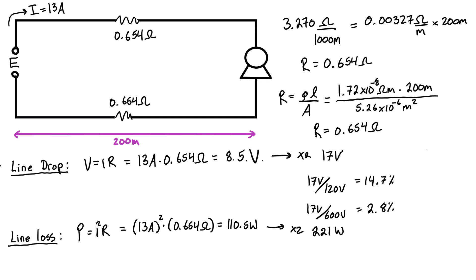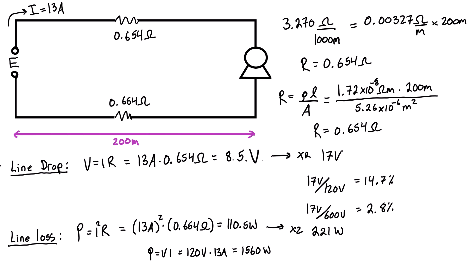Now just going hypothetically a little bit further here with this 120 volt versus 600 volt example. Let's assume we have the 120 volt circuit and we're talking about the power. Power equals voltage times current, and at 120 volts we would have 120 volts times 13 amps, so we'd be looking at 1560 watts of total input. And if we're losing 221, well 221 divided by 1560 is going to give us that 14 point something percent, which again is probably not great in real life.